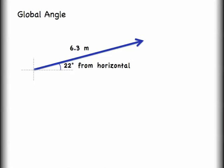If I look at the first vector that I gave as an example, I can see that that 22 degrees there is actually already being measured from east. And so this vector is unchanged. I would say it is 6.3 meters at 22 degrees. In fact, I could even drop out the from horizontal.